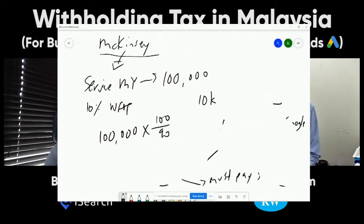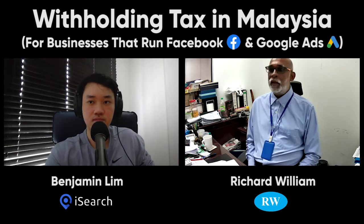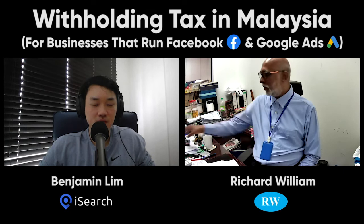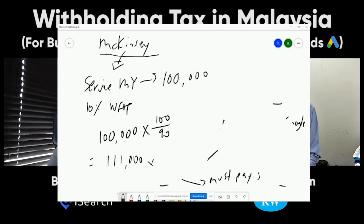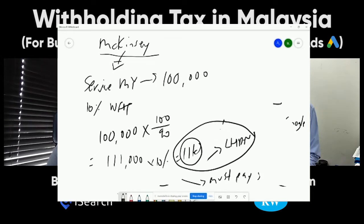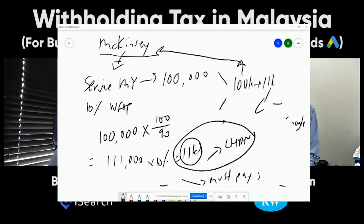But the reality is many Malaysian companies are forced to bear the withholding tax because these overseas companies take advantage — if you want their service, you bear the withholding tax. So if McKinsey insists on 100,000 full payment, you have to gross up: 100,000 × 100 ÷ 90 = 111,111, and 10% of that is 11,111 of withholding tax that the Malaysian company has to bear — and it's not tax-allowable. On top of the 100,000 to McKinsey, you also pay 11,111 to LHDN.